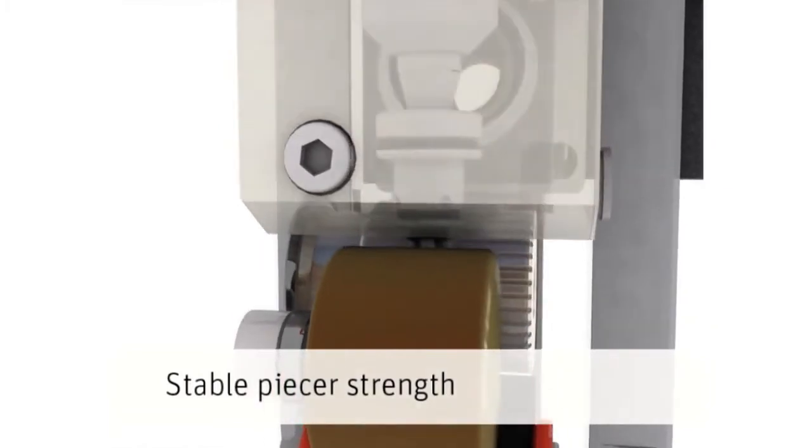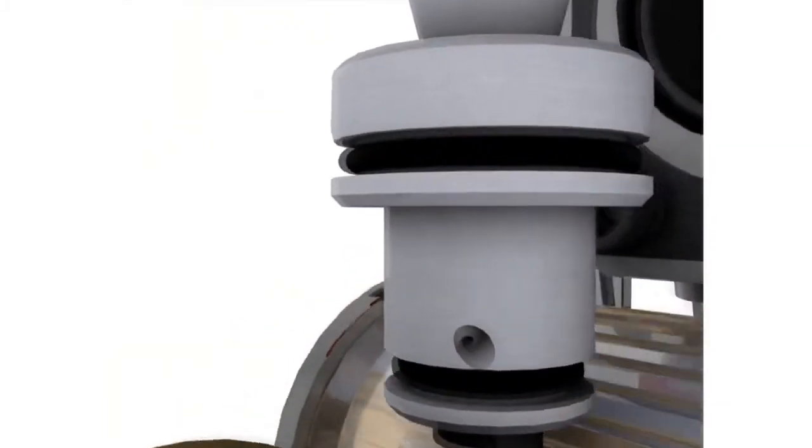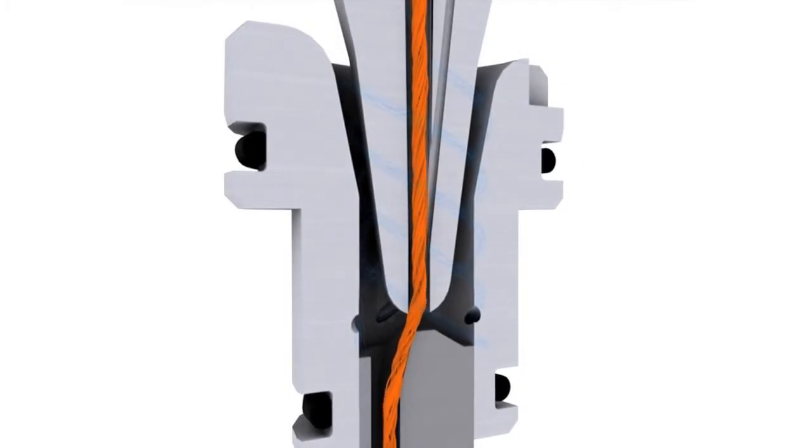Thanks to the ComfortJet piecing technology, the yarn is always intertwisted inside the piecer body. The fiber spun out of the newly fed fibers wraps around the piecer core.